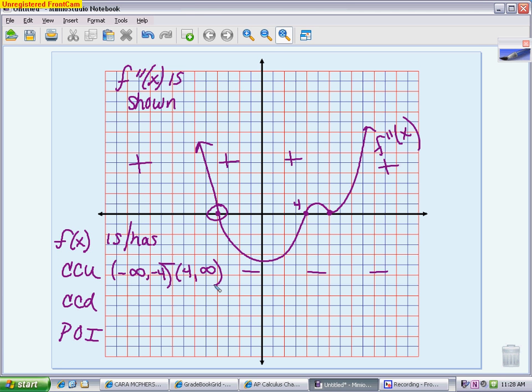It is concave down when it's below the axis, and that happens between negative 4 and positive 4.